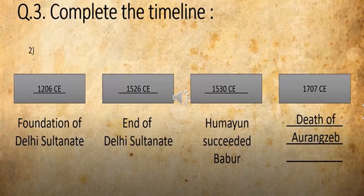Humayun succeeded Babur — in which year? 1530 CE. And the last one: they can give you 1707, 1710, or 1715 CE, and then the date of Aurangzeb's death. You are going to click at the right one. When was the date of Aurangzeb's death? In this way you have altogether found such types of questions from which questions can be asked.